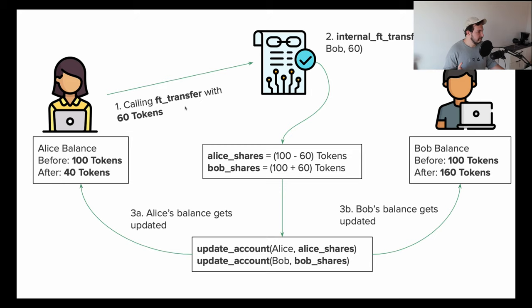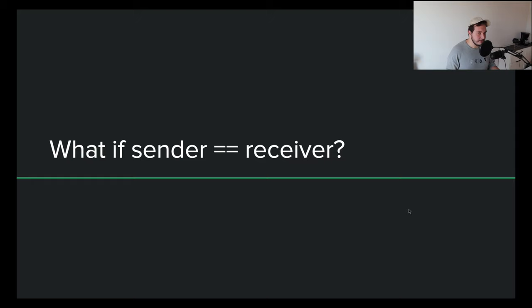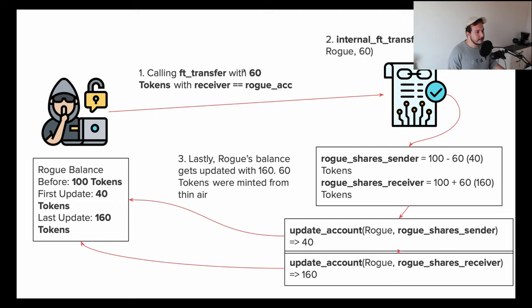For example: Alice calls ft_transfer with 60 tokens to Bob. The contract calls internal_ft_transfer from Alice to Bob. Alice's shares get updated to 40 (100 minus 60), Bob's shares get updated to 160 (100 plus 60). Then update_accounts inserts the data to storage — Alice's balance becomes 40, Bob's becomes 160. All sounds good. But what if sender equals receiver?